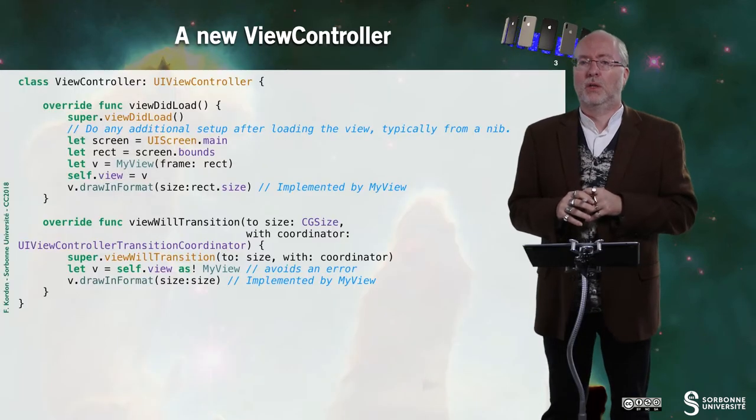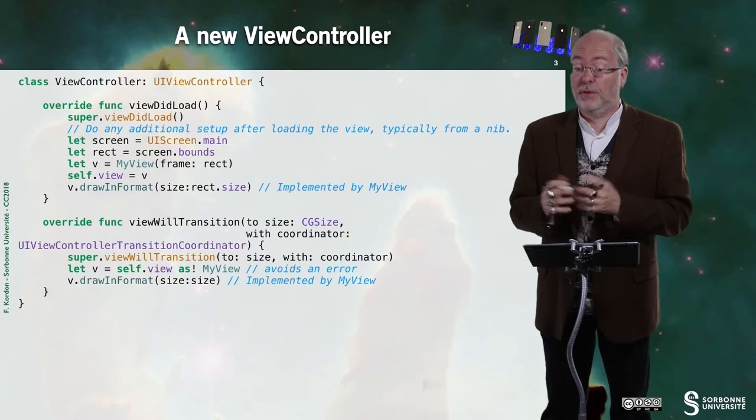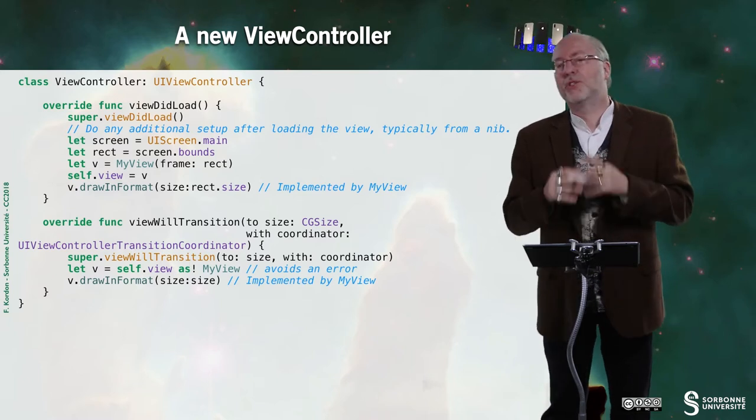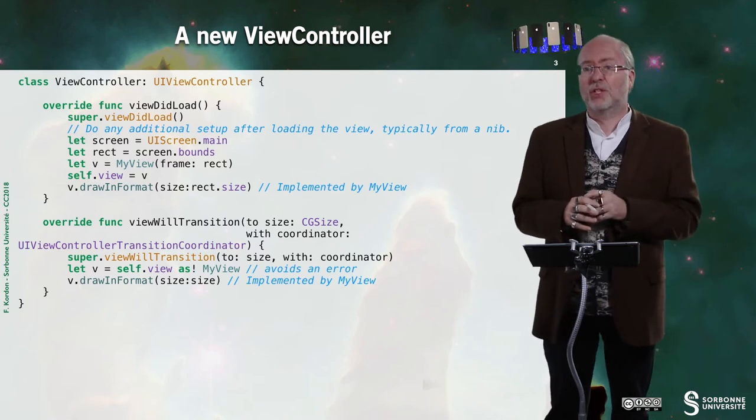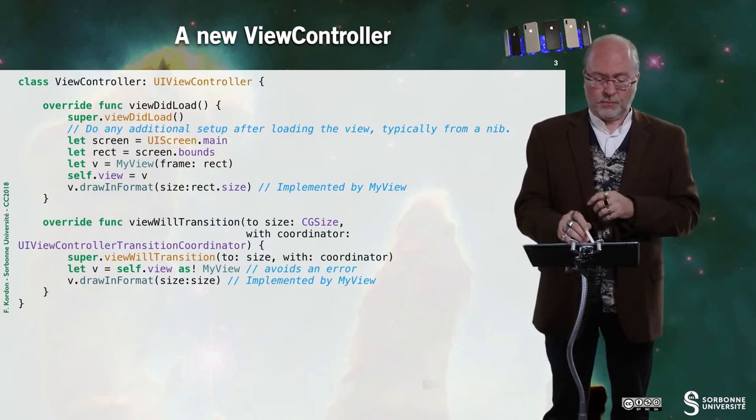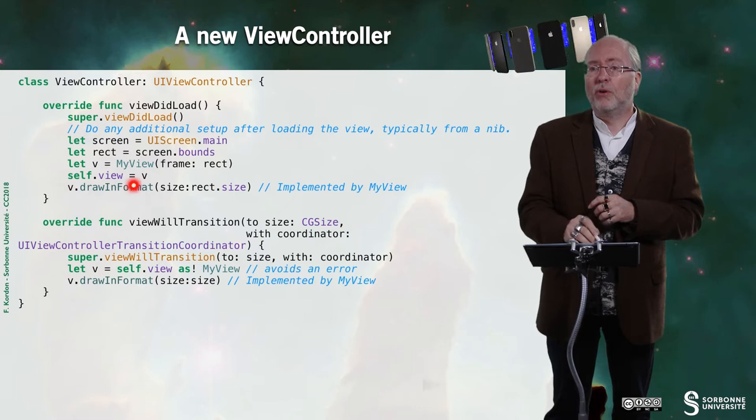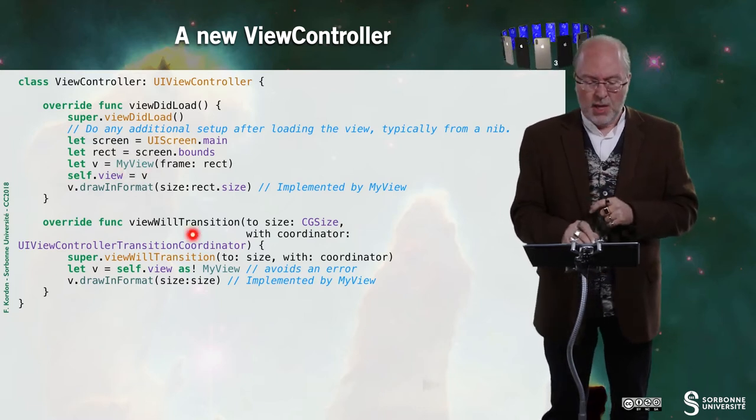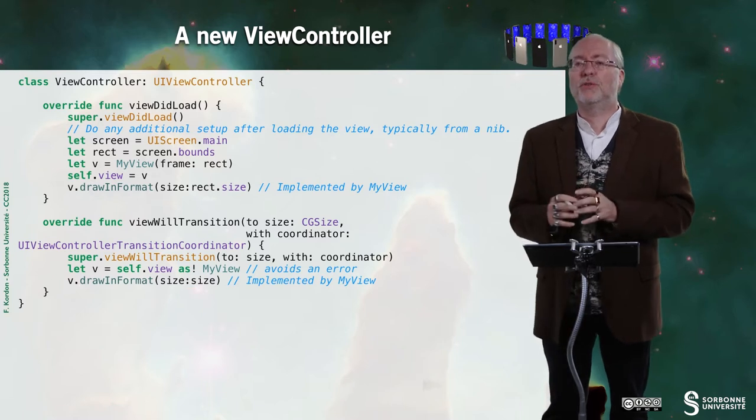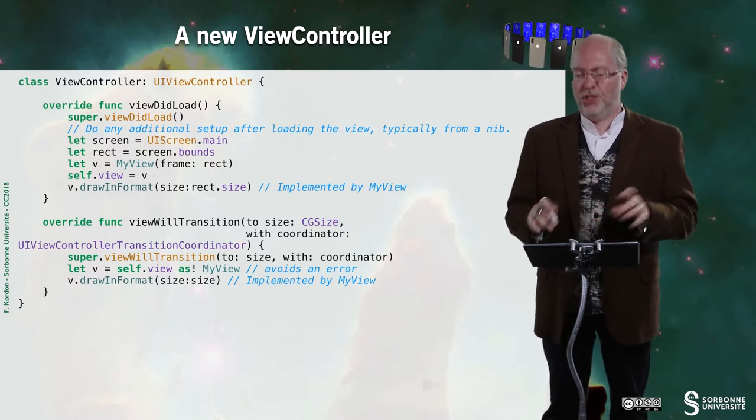So, I reprogram the view controller of the MyView example. Here, I just do it in the Swift version, but I can do exactly the same with the Objective-C version. I have a ViewDidLoad. I create an object of class MyView. I have the view will transition to size, and more or less nothing changes here.